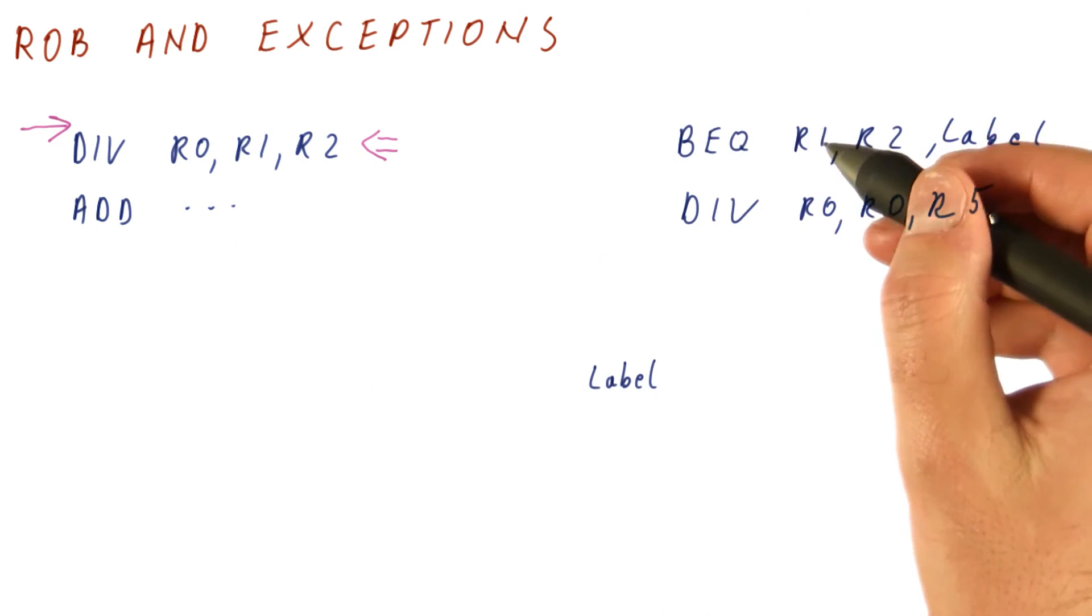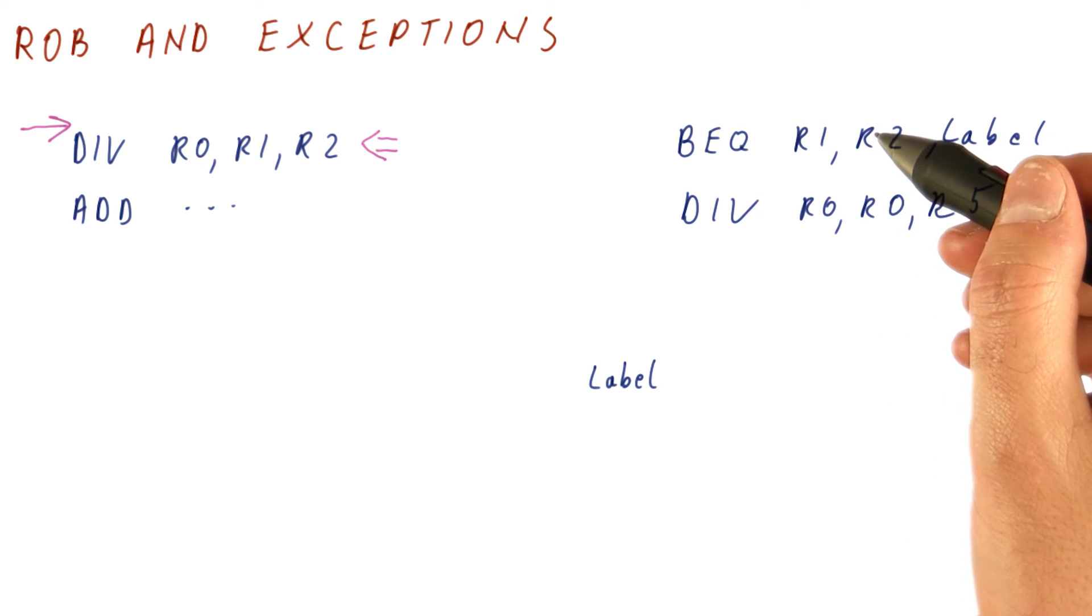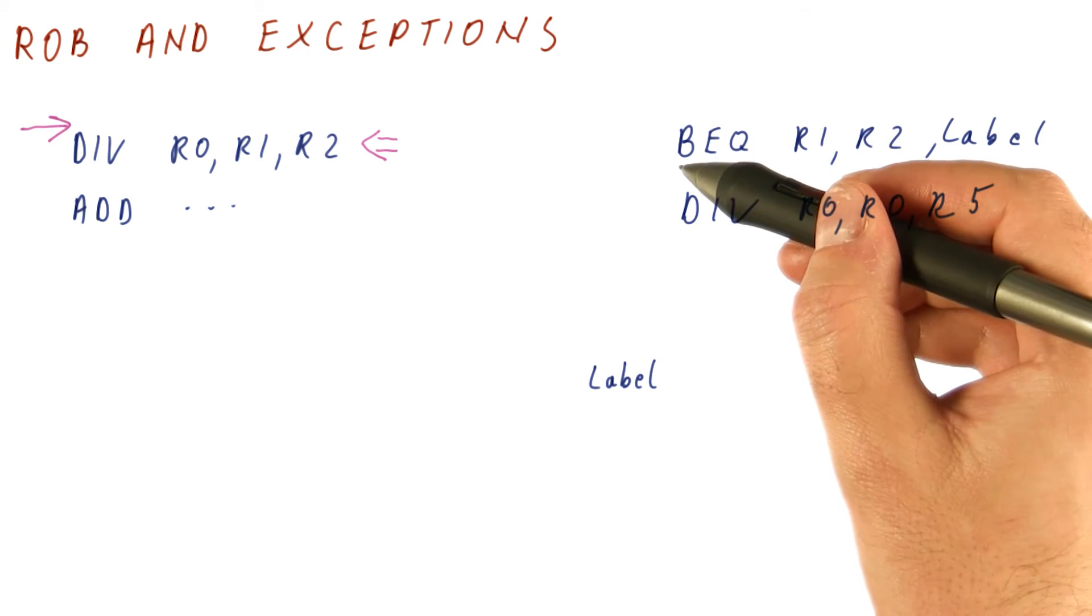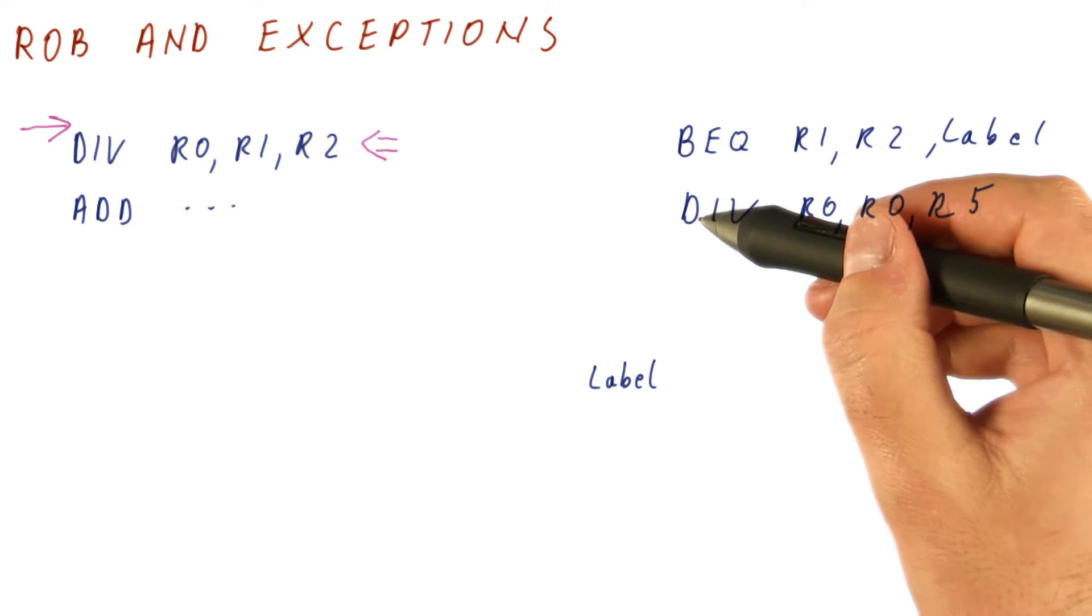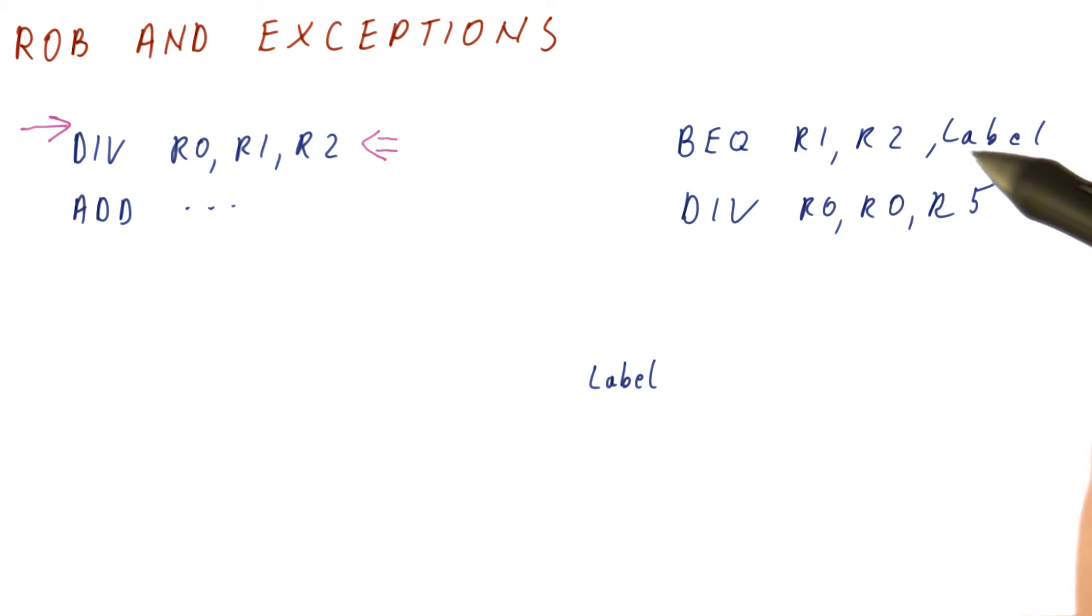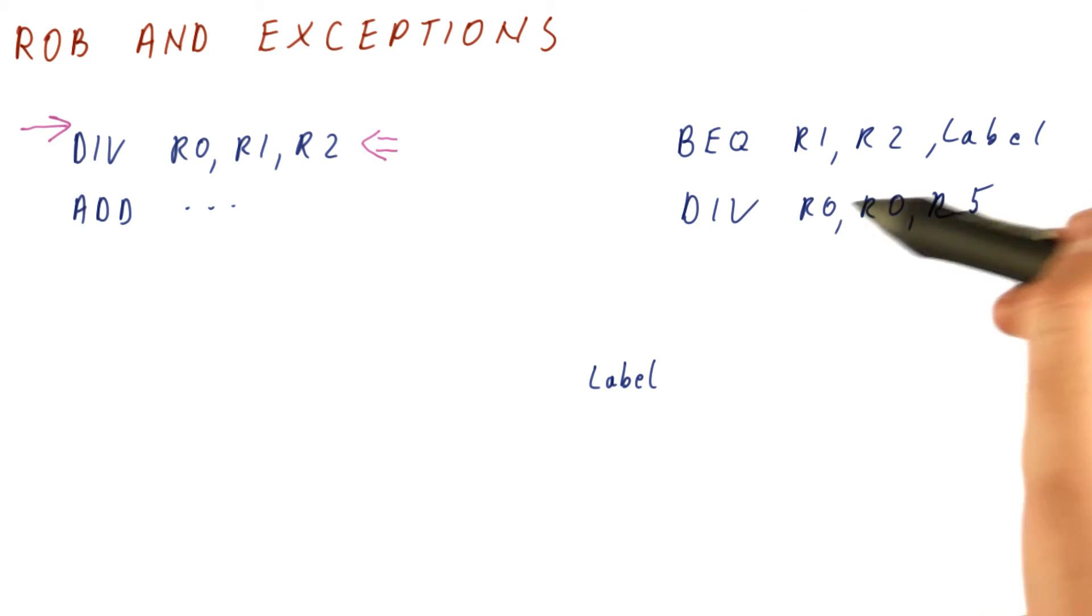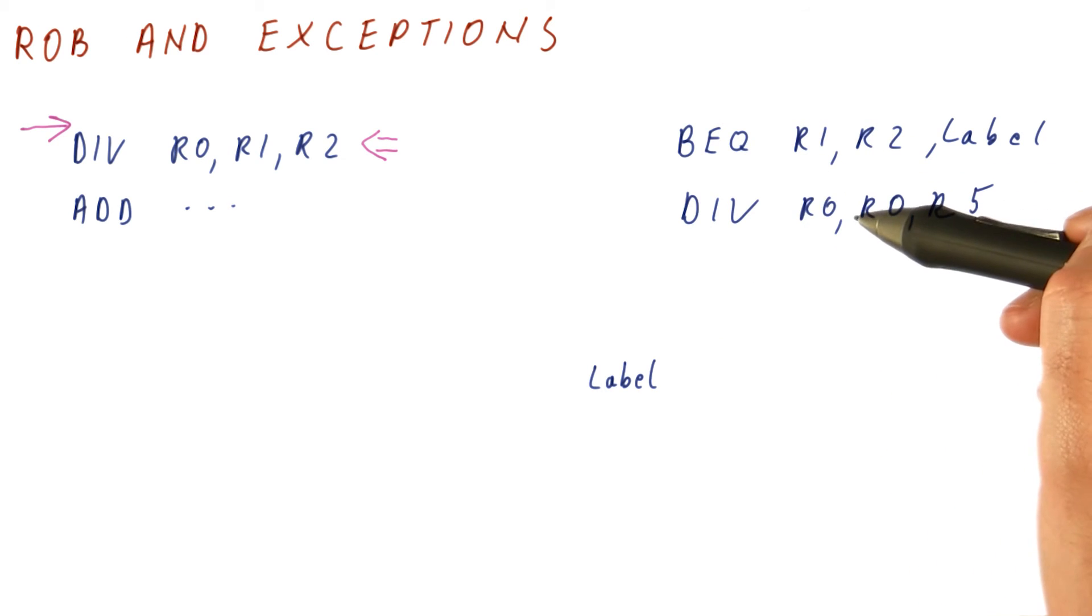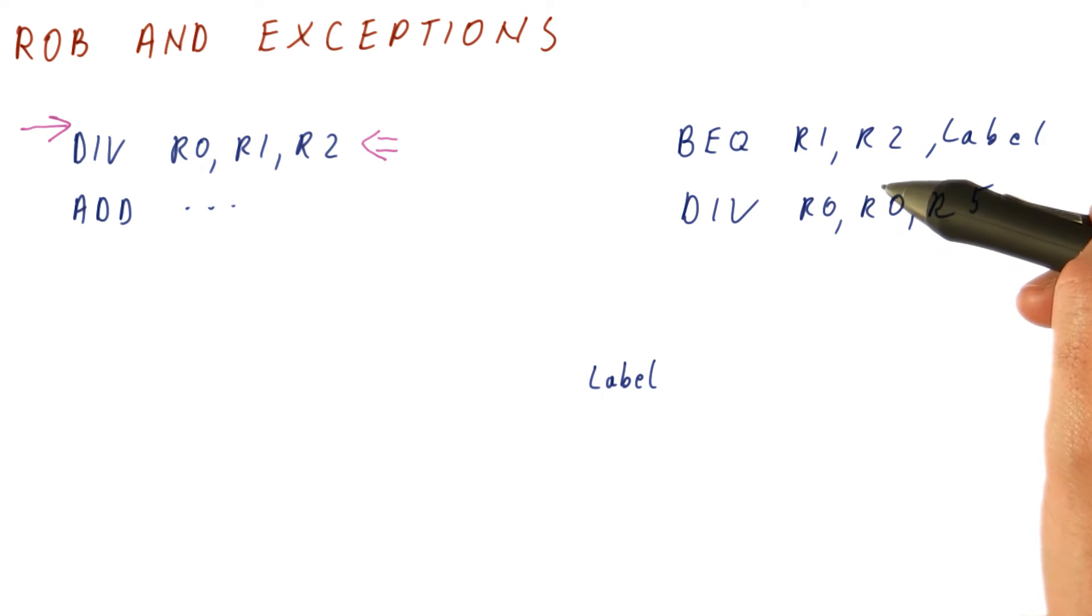The second problem with exceptions we had were those phantom exceptions. If we predicted that the branch here is not taken, we would execute this divide and maybe get the exception like divide by zero. At the time when we get that exception, maybe the branch is still not resolved. So when we finally resolve the branch, it's too late because the divide by zero has already been triggered.